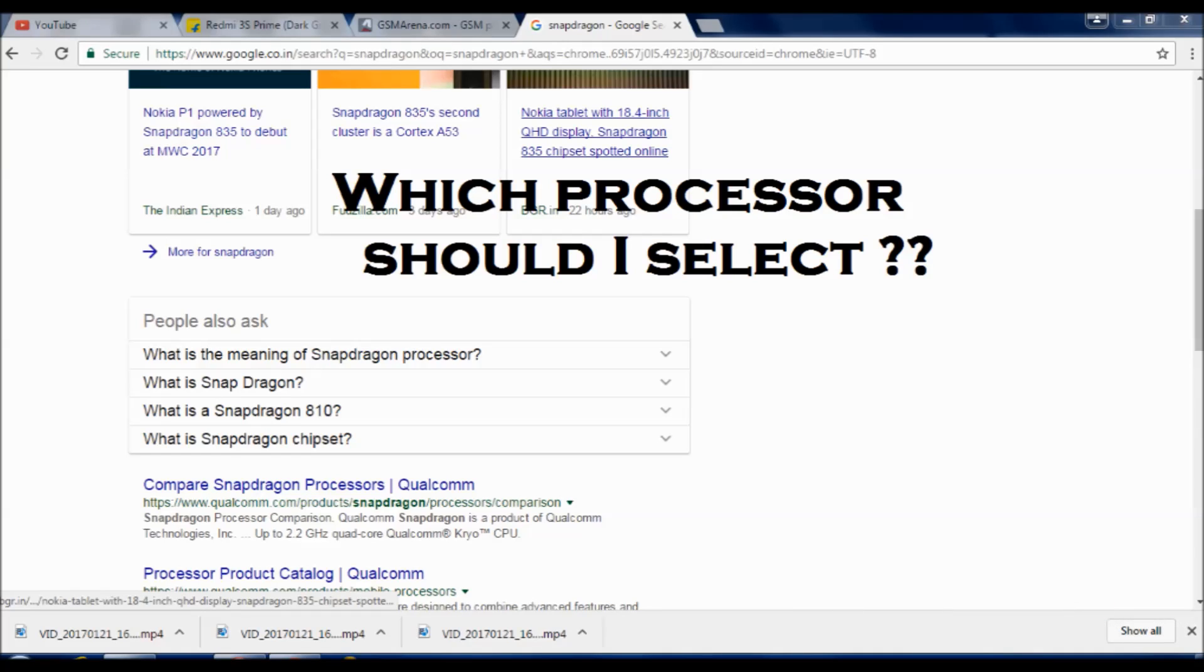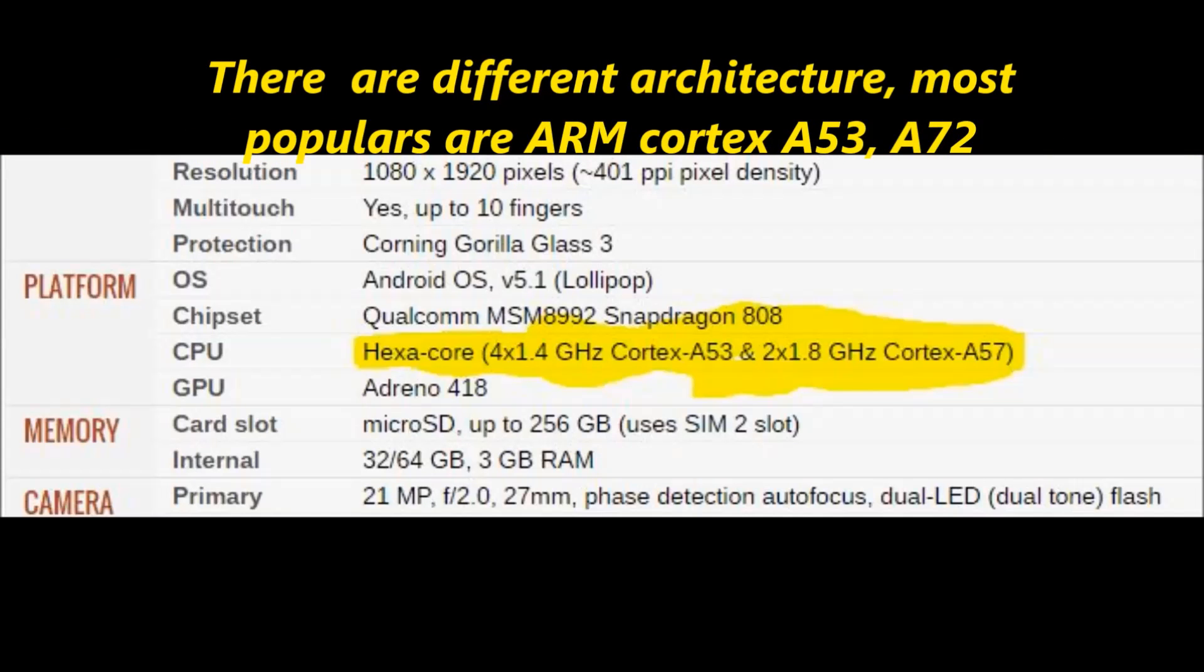So there is a new thing in the Snapdragon processors that this processor has ARM Cortex A57 architecture and has 8 cores, and another one has 625 processor which is having ARM Cortex A57 architecture with 6 cores and all these things.